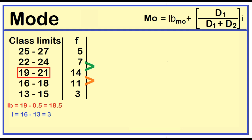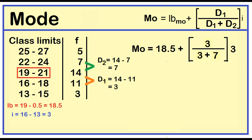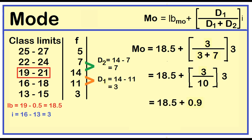D sub 1 is the frequency of the modal class minus the frequency of the next lower class: 14 minus 11 is 3. D sub 2 is the frequency of the modal class minus the frequency of the next upper class: 14 minus 7 is 7. Mode is equal to 18.5 plus the product of 3 over (3 plus 7), times 3. This equals 18.5 plus 3/10 times 3, which equals 18.5 plus 0.9. Mode is equal to 19.4.